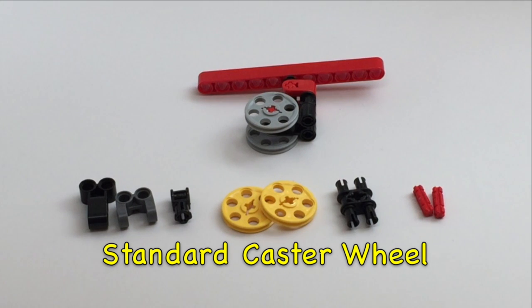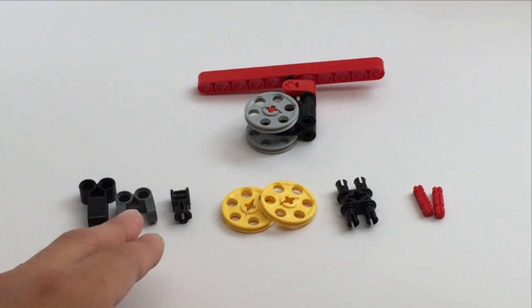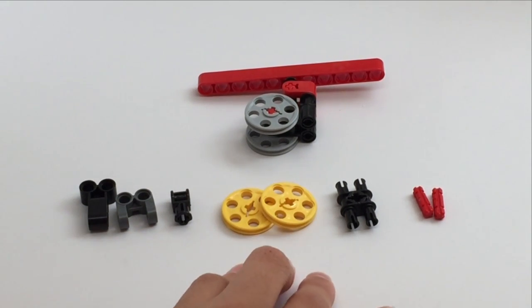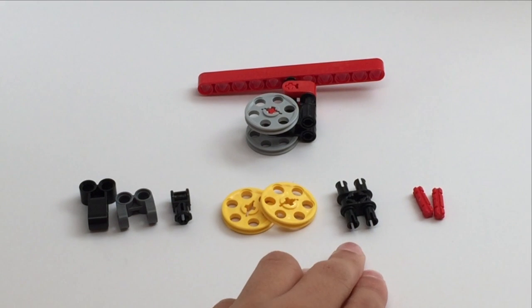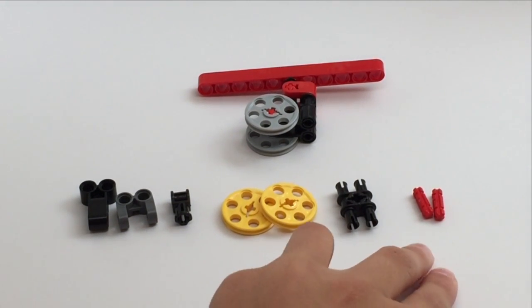Now I'm going to teach you guys how to make the standard caster wheel. You're going to need some angle changing pieces, some wheels, one of these beam connector pieces, and two red axles.